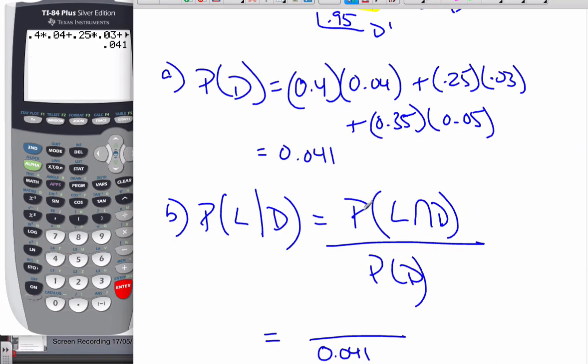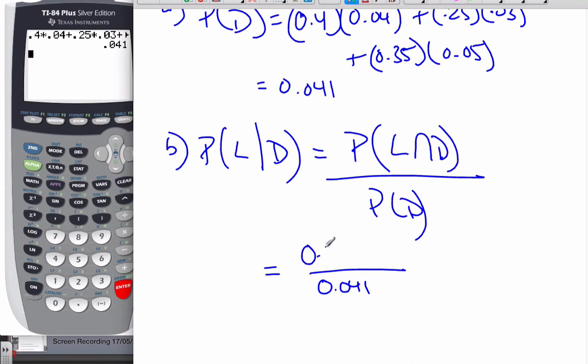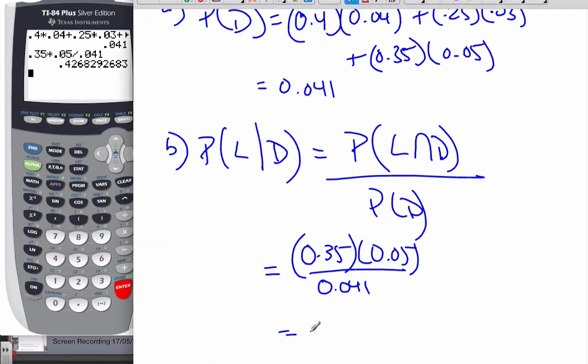The probability of Lucas and defective, looking at my tree diagram, is this branch here, 0.35, 0.35 times 0.05. And so when I do this, this is the probability that came from Lucas, the probability of coming from Lucas, given that I know it's defective. And so it's 0.35 times 0.05 divided by 0.041. And that produces for me 0.427% that it came from Lucas, if I know it was defective already.